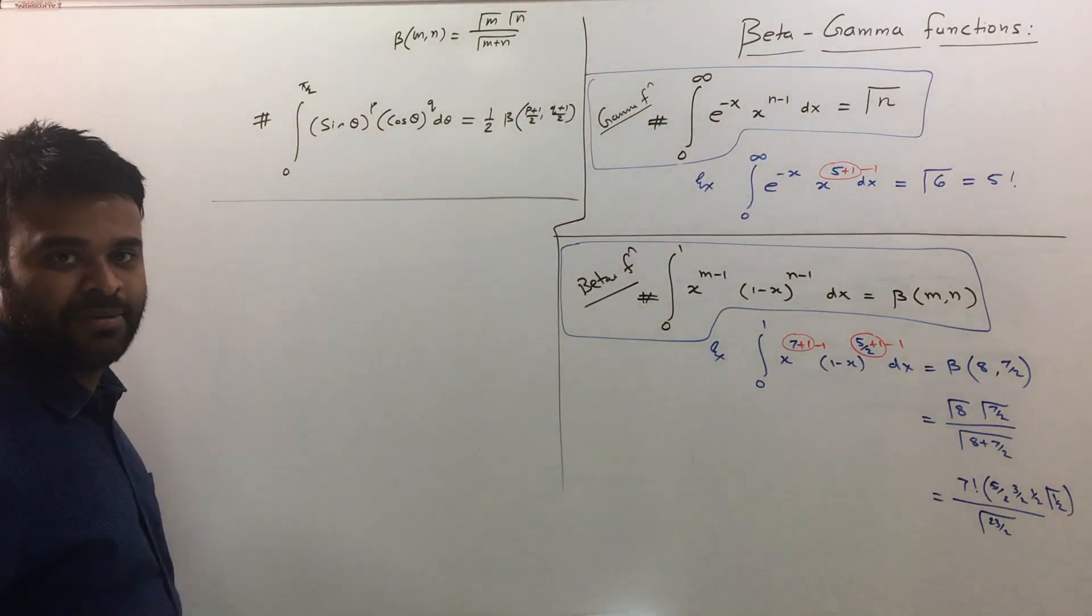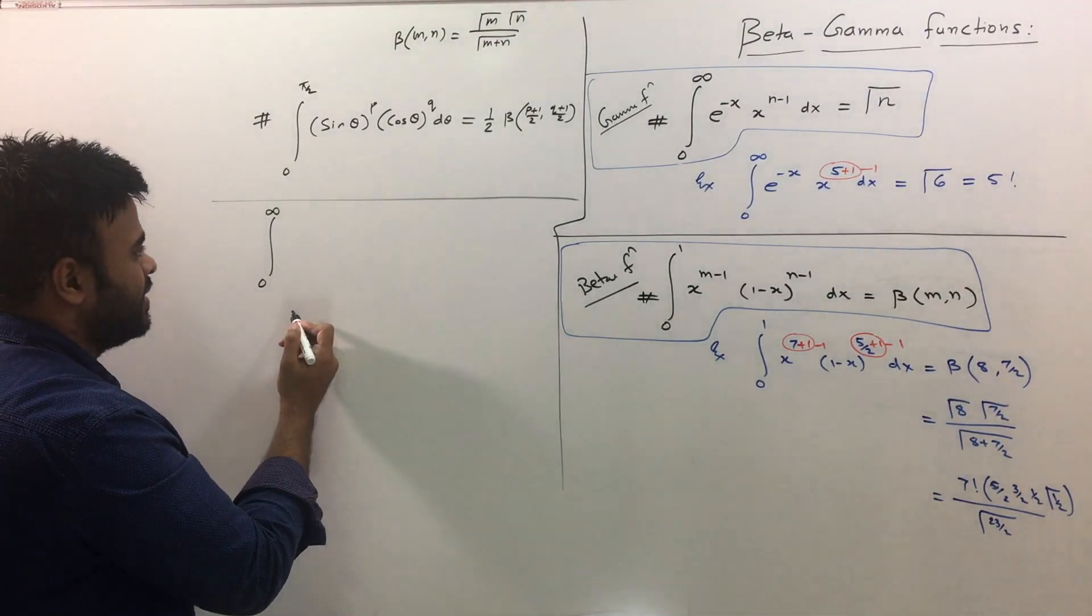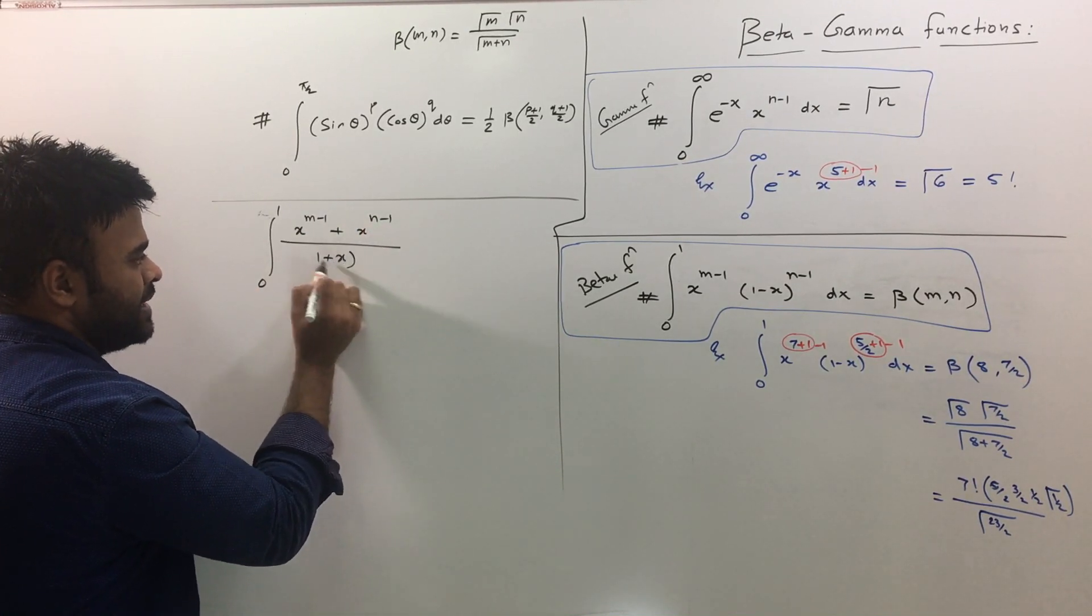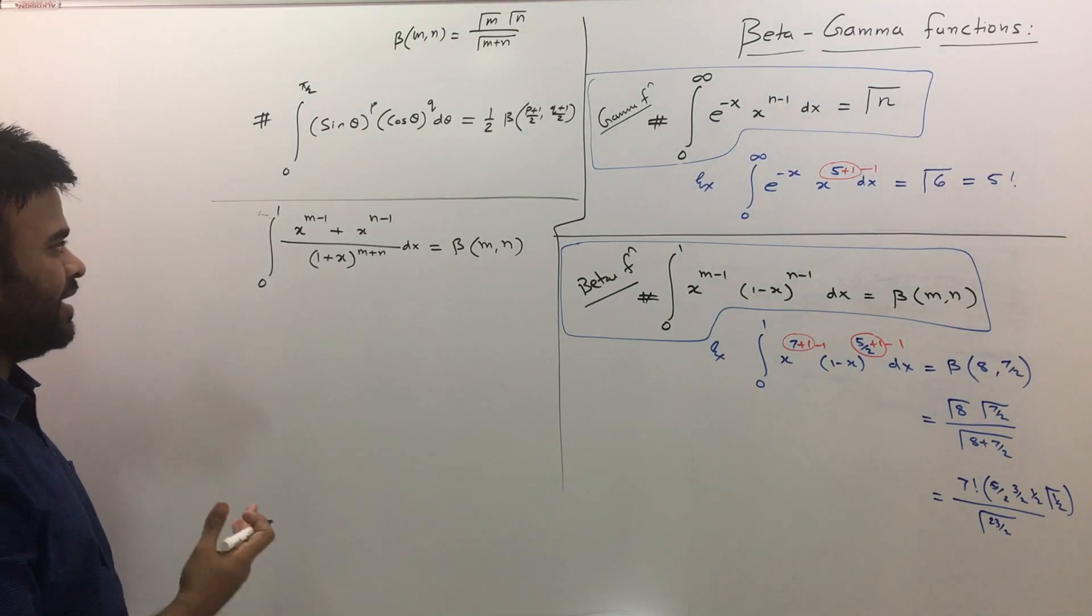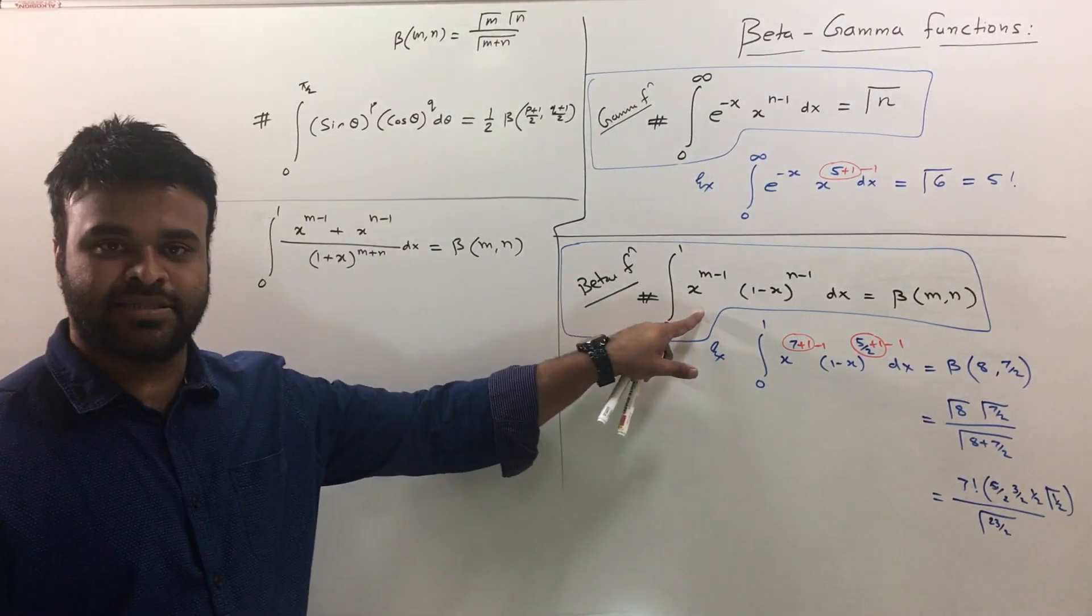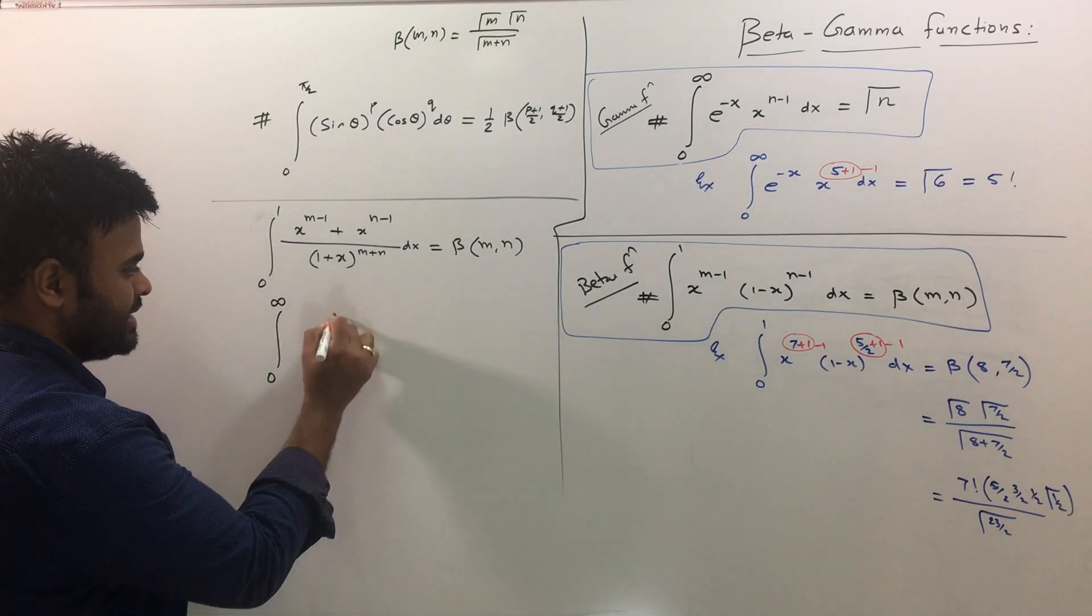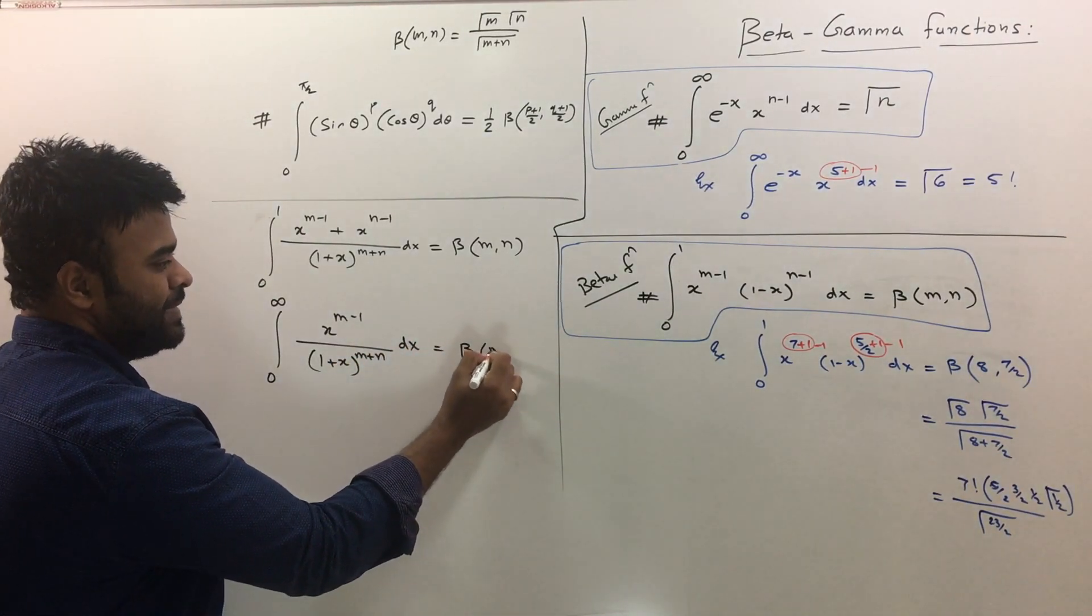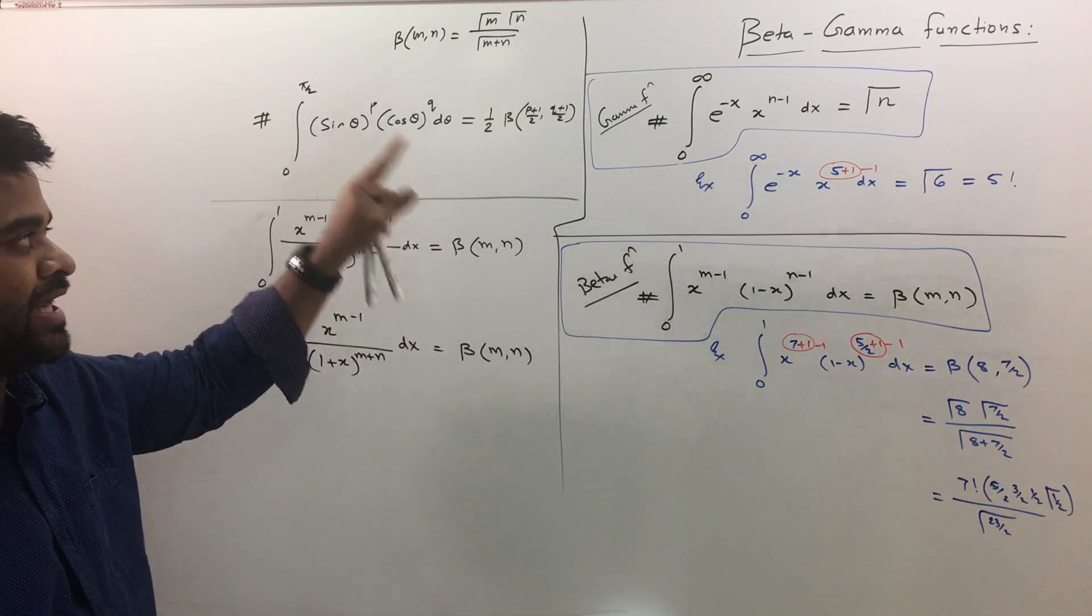You can actually simplify beta functions in many ways, but these three are the more important ones. Also beta can be simplified in some other ways as well. Supposing if you have integration 0 to 1, x raised to m minus 1 plus x raised to n minus 1 upon 1 plus x raised to m plus n dx. Even this can be written as beta mn. Less frequently used formula. And then there is one more: integration 0 to infinity, x raised to m minus 1 upon 1 plus x raised to m plus n dx can also be written as beta mn. Not very important, but just at least remember the three hashtags, the main formulae of beta gamma function.